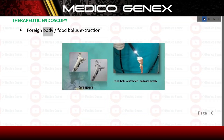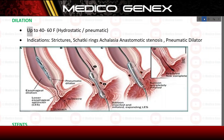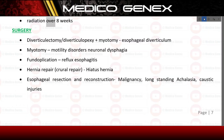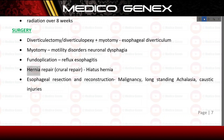Therapeutic endoscopy includes foreign body and food bolus extraction. Dilation (up to 46 French, hydrostatic or pneumatic) is indicated for strictures, Schatzky rings, achalasia, and anastomotic stenosis using a pneumatic dilator. Stents may also be placed. Chemoradiation: for grade 1 to 3 dysphagia in cancer of the esophagus — neoadjuvant; for grade 4 to 6 — palliative (cisplatin plus 5-FU plus radiotherapy over 8 weeks). Surgery includes: diverticulectomy or diverticulopexy plus myotomy for esophageal diverticulum; myotomy for motility disorders and neuronal dysphagia; fundoplication for reflux esophagitis; hernia repair and crural repair for hiatus hernia; esophageal resection and reconstruction for malignancy, long-standing achalasia, and caustic injuries.